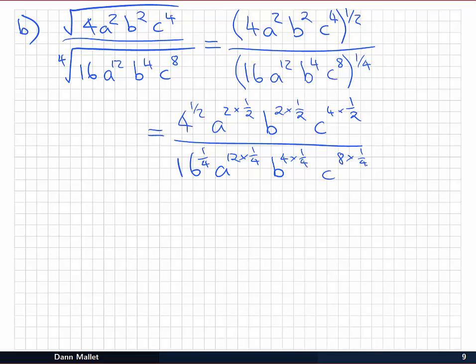Now we just need to clean all of those up. For example, 4 to the 1/2 is 2, 2 times 1/2 is 1, and so on down the line. So we should have 2abc² all divided by 16 to the 1/4 power. Convince yourself that that's also 2. 2 by 2 by 2 by 2 is 16. a to the 12 times 1/4 is a³, b to the 4 times 1/4 is b, and finally c².